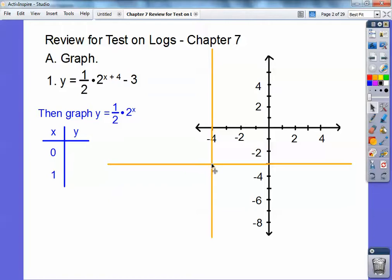Just pretend like this is 0, 0 from now on. Even though this is 0, 0, this is going to be our pretend 0, 0. So when x equals 0, 2 to the 0 is 1, so I get 1 half. When x equals 1, 2 to the 1 is 2, 1 half times 2 is 1.